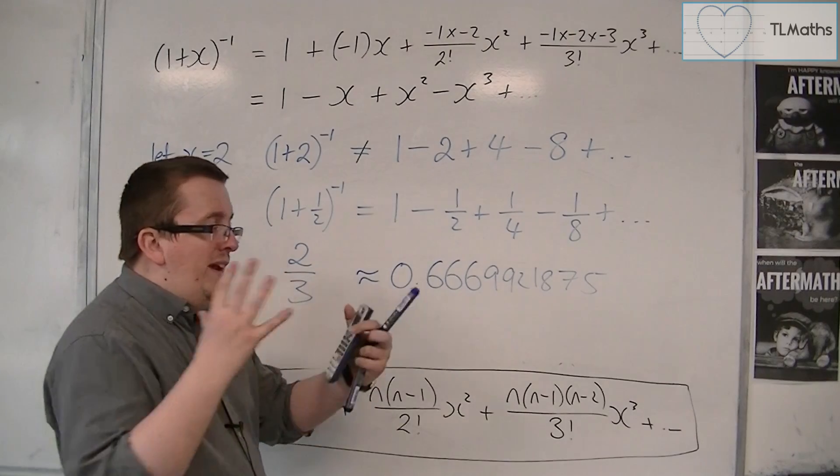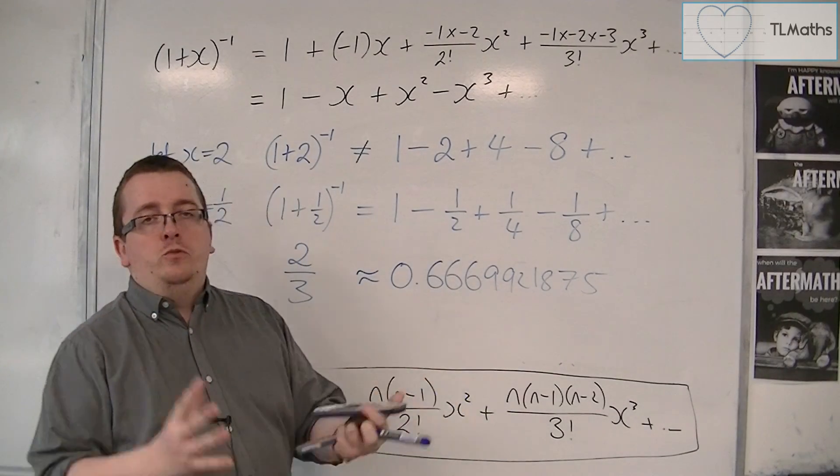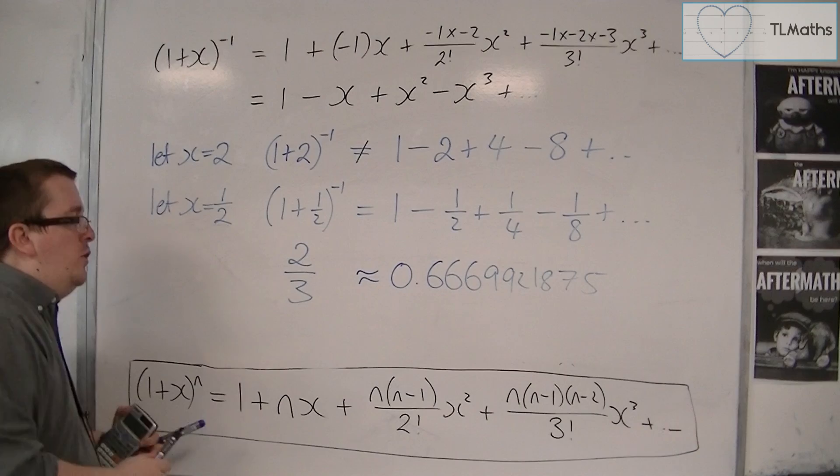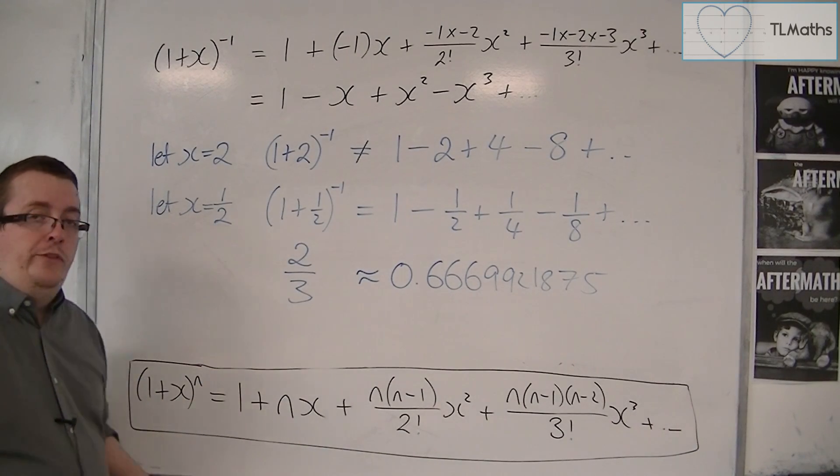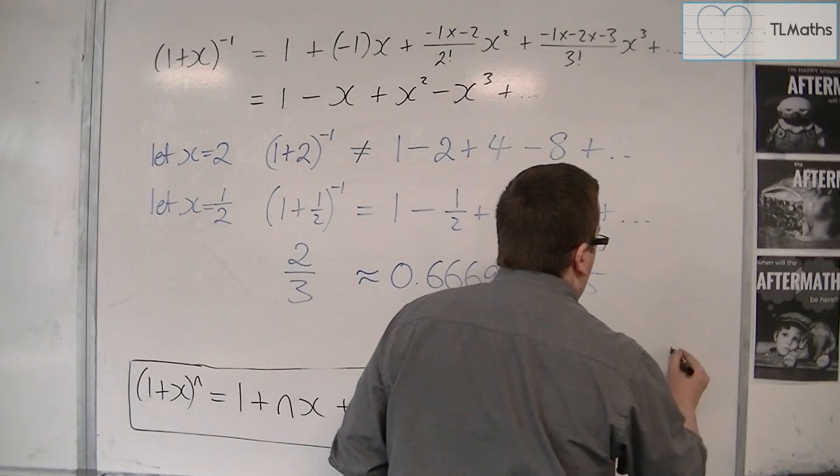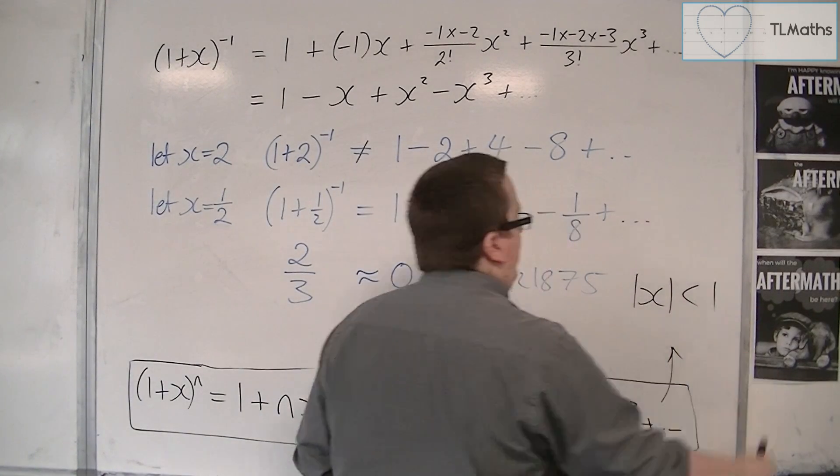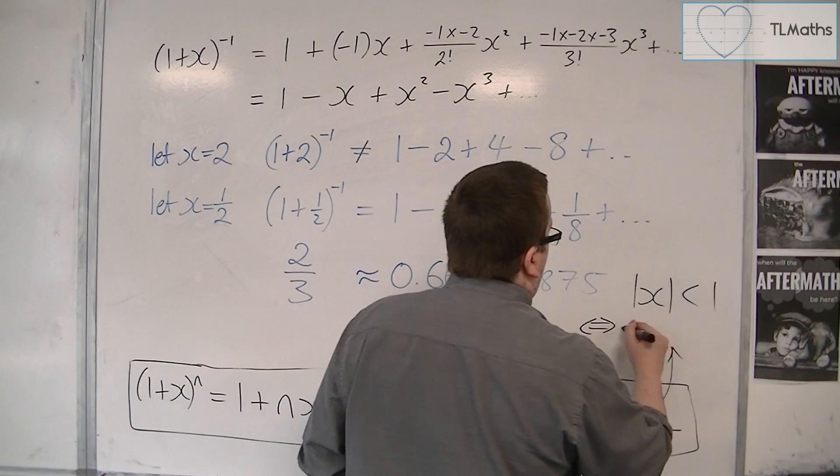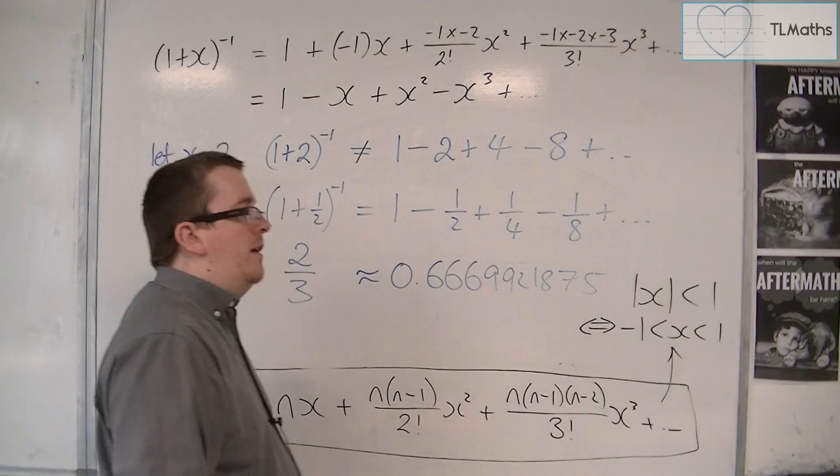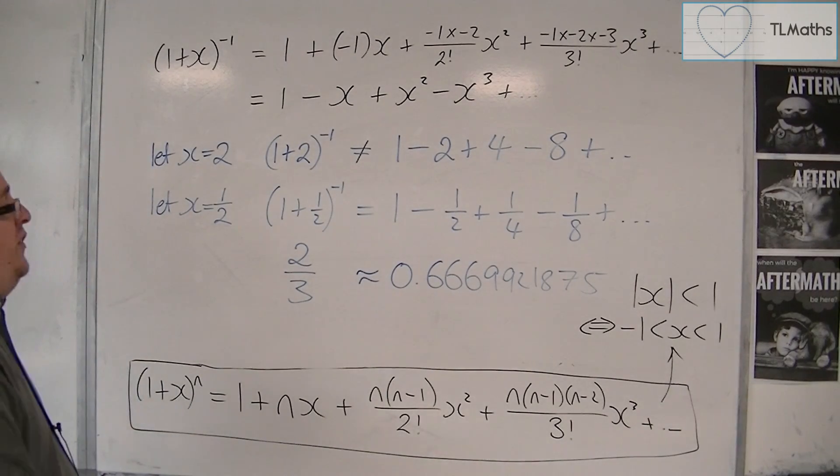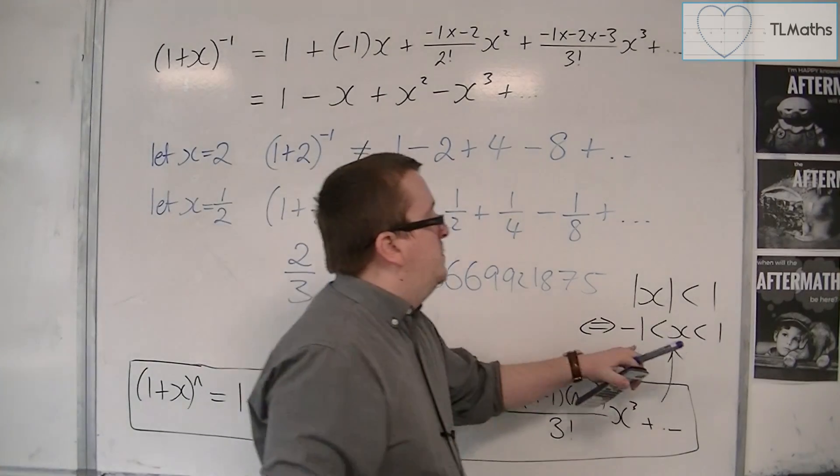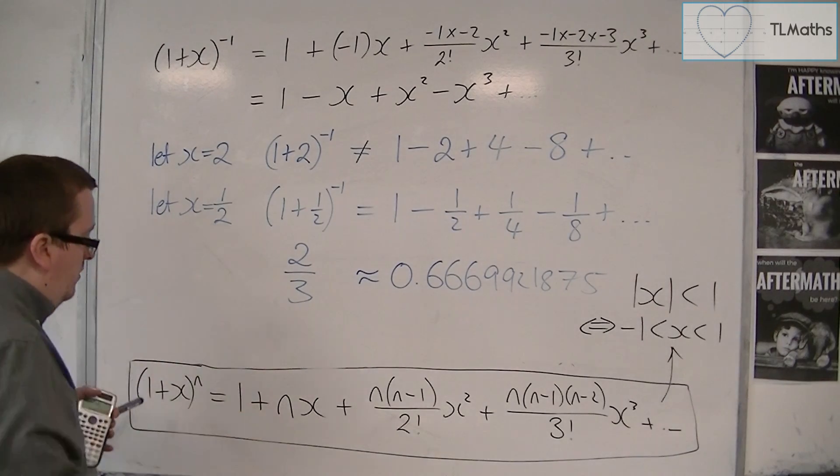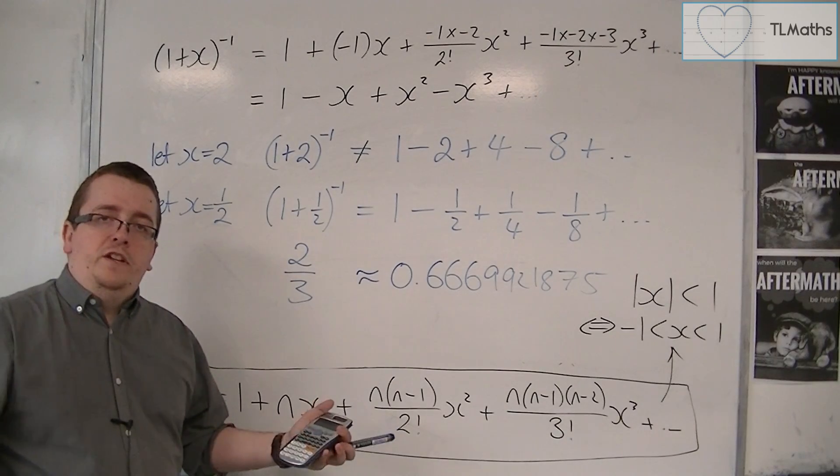So there must be a range of values of x for which this expansion works. And this is the range of values of x, which I wrote in when I first introduced this formula, and that is that the modulus of x has got to be less than 1. And this is equivalent to x being anywhere between minus 1 and 1. So as long as the x value that you're substituting in is between minus 1 and 1, it will give a good estimate. In fact, it will be equal, as long as you added together an infinite number of terms.